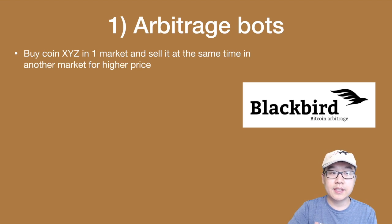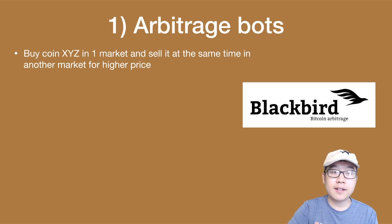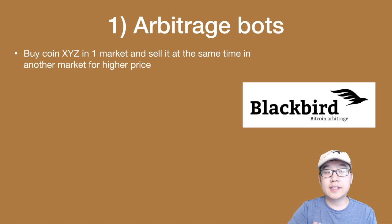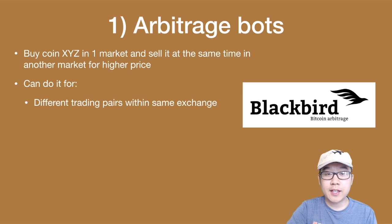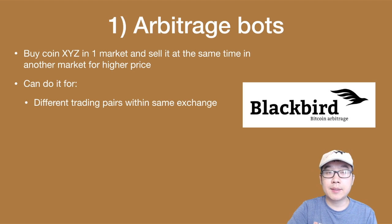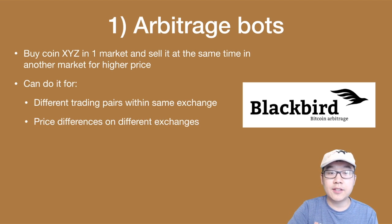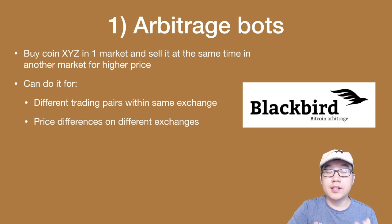Number one is arbitrage bots. This is where you can buy coin XYZ in one market and sell the same type of coin at the same time in another market for a higher price. You can do it for different trading pairs within the same exchange, and also for price differences on different exchanges. If you don't understand arbitrage, I've made another video about that on my channel, so you should go check that out as well.